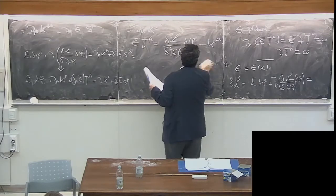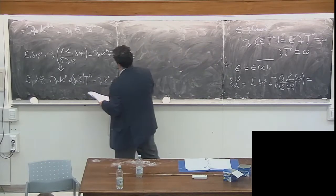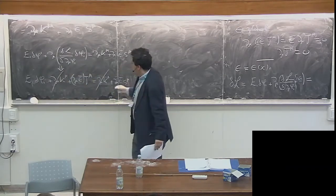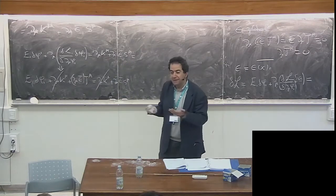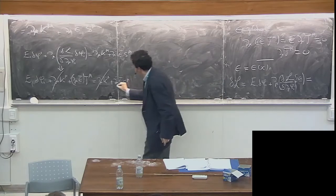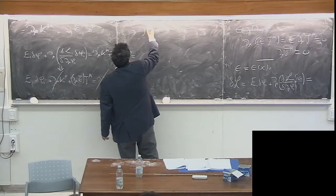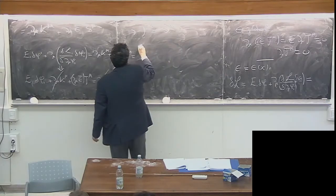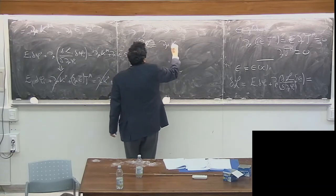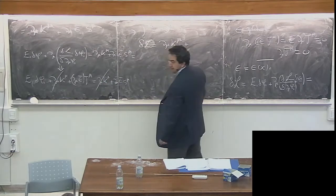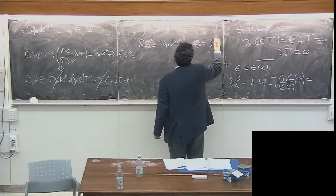The d_mu k_mu terms simply cancel. Terms one and two go away, and now I need to equate the terms containing d_mu epsilon — they have to cancel, they have to match. So this implies that j_mu equals s_mu, namely that the variation of the Lagrangian is now equal to d_mu k_mu plus epsilon d_mu epsilon j_mu.